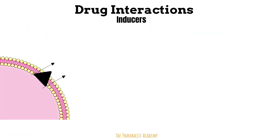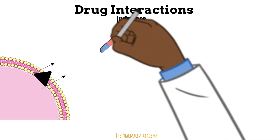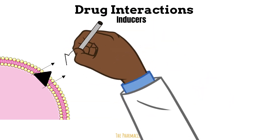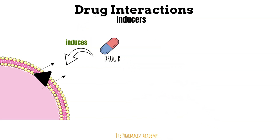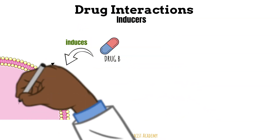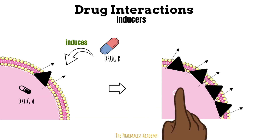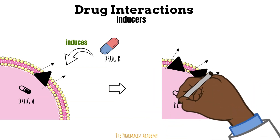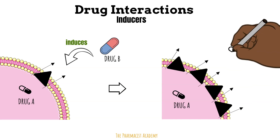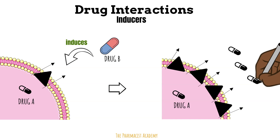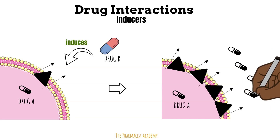We have drugs that actually induce these proteins. So in this case, we have drug B, which is a P-glycoprotein inducer. It will induce a P-glycoprotein that drug A is normally a substrate of. Now not only do we have more of these proteins, but they're also working pretty well. So it will end up kicking a lot of drug out of the cell, leading to a reduction in the distribution, the therapeutic effects, and increasing the amount that's possibly eliminated.